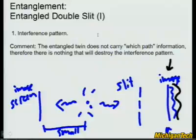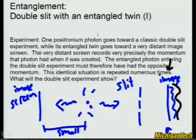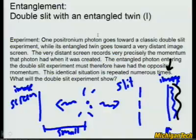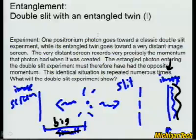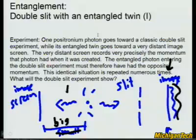Let's go around again. This time, one positronium photon goes toward a classic double-slit experiment, just like before — but now the entangled twin goes to a very distant image screen. We're going to take that screen and replace 'small' with 'big.' This is a very big distance — well across the hall, down the hall, next building, across campus, on the moon. So once this image screen is far enough away, shouldn't you be able to tell where this photon is going?